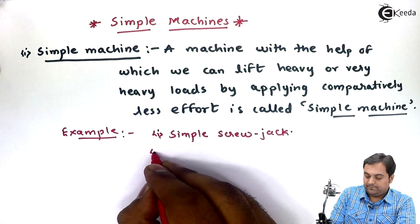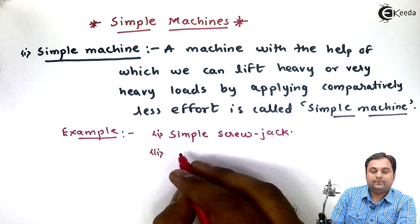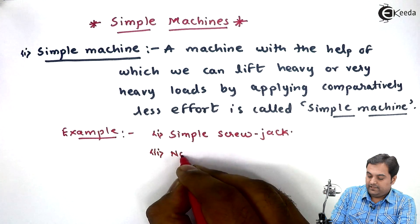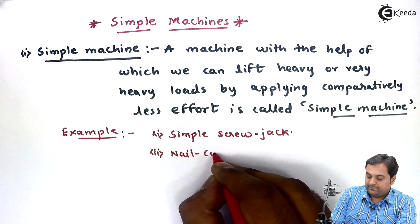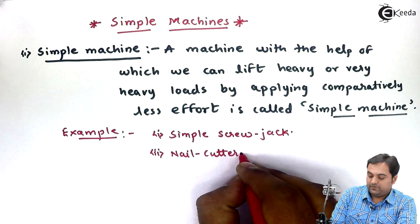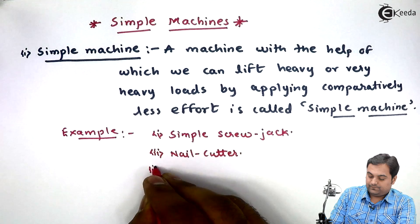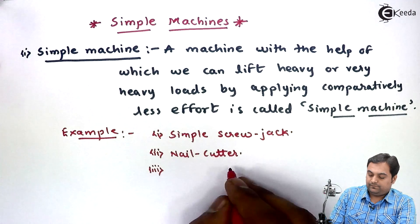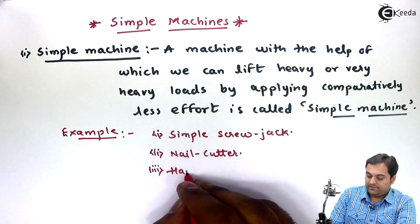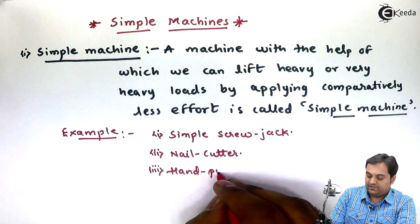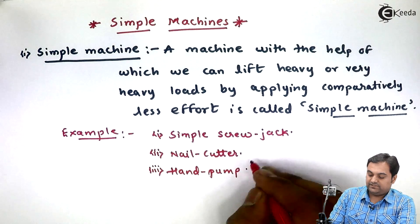The other examples are nail cutter, it is also an example of a simple machine where we are applying less effort. Next, hand pump, it is also an example of a simple machine.